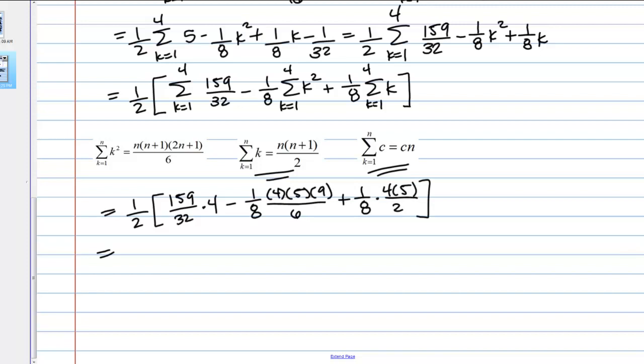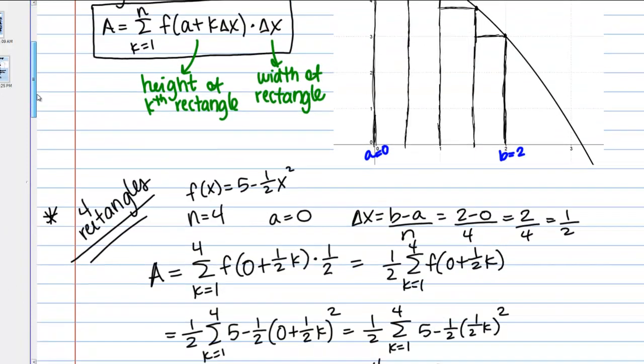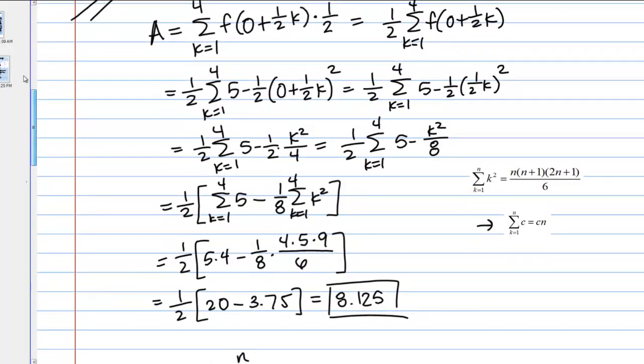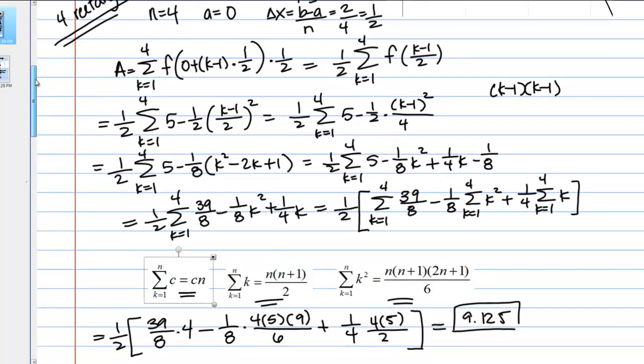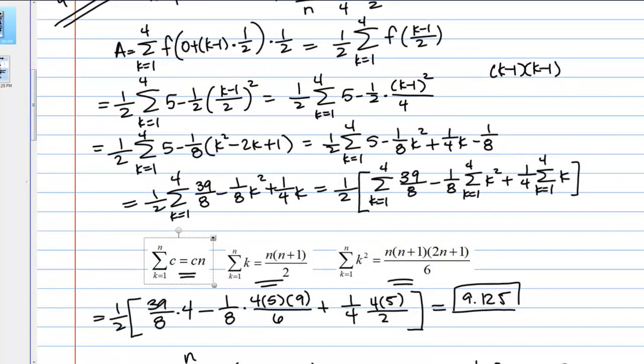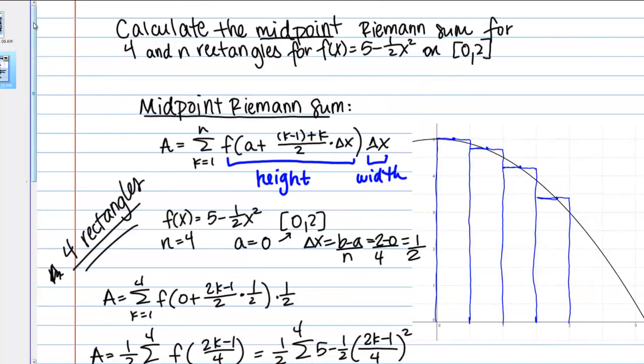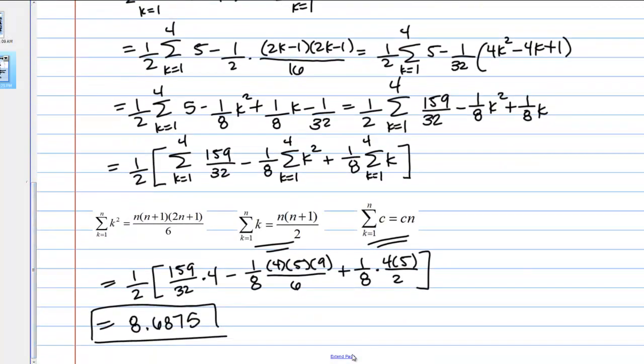Now, we just need to evaluate this. This is something that you could just put in your calculator, or work it out by hand if you want. If you work that out, you should get 8.6875. This is my estimate for the area under the curve. Now, in previous videos I did right and left Riemann sums. On the right Riemann sum, I got 8.125. On the left Riemann sum for 4 rectangles, I got 9.125. It makes sense that this would be in between them, because it's the midpoint Riemann sum. That at least makes sense.